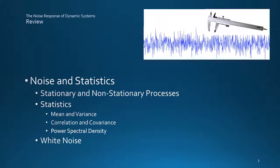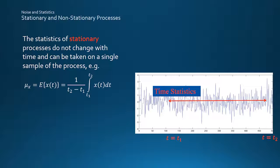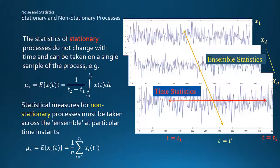Starting then with a whistle-stop recap of noise processes and their statistics. Noise is said to be stationary if its statistics don't change with time, in which case we can take measurements along the time scale of a signal to find its average or mean value. But this doesn't work for non-stationary processes, whose statistics do change with time, and the only way to find a statistic like the mean is to take an average of many different samples of the process at the same time instant.